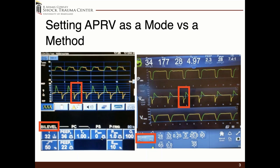First, I want to look at setting APRV as a mode versus a method. Both of these ventilators are set in the bi-level or APRV mode, but the waveform graphic looks significantly different between the two. Although the ventilator has the mode, there are various ways you can set it. On the left, we have a P high of 36, a P low of 22, a T high of one second with a rate of 32. On the right, we have a P high of 32 but a P low of zero, and we're using time to control our end-expiratory lung volume — in other words, setting the PEEP.